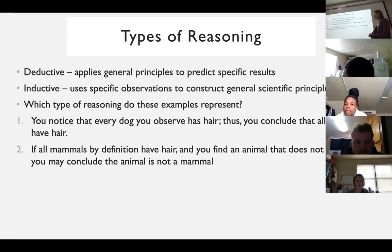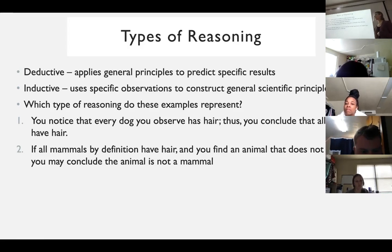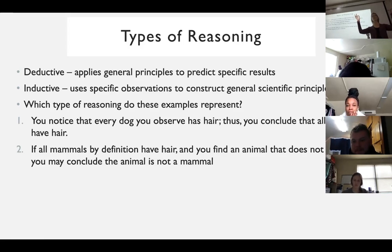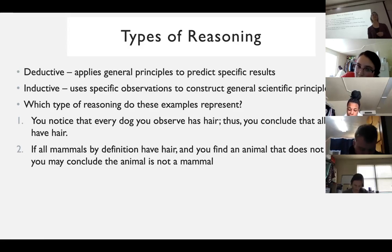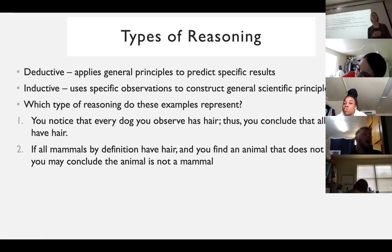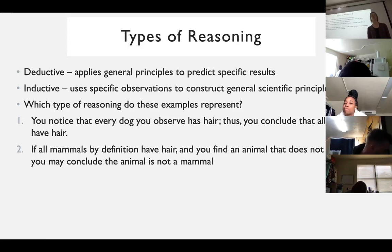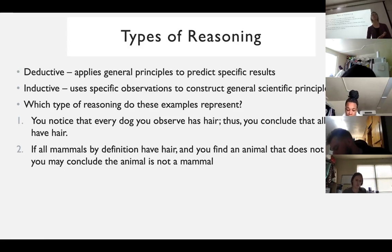The second example: if all mammals by definition have hair, and you find an animal that doesn't have hair, you might conclude the animal is not a mammal. That would be deductive - you're starting with a general principle and applying it to a specific case. In the case of a reptile that doesn't have hair, that conclusion would be correct - reptiles are not mammals. Both inductive and deductive reasoning are very useful. These days we use deductive a lot more because we have many general principles and use those to predict specific outcomes.